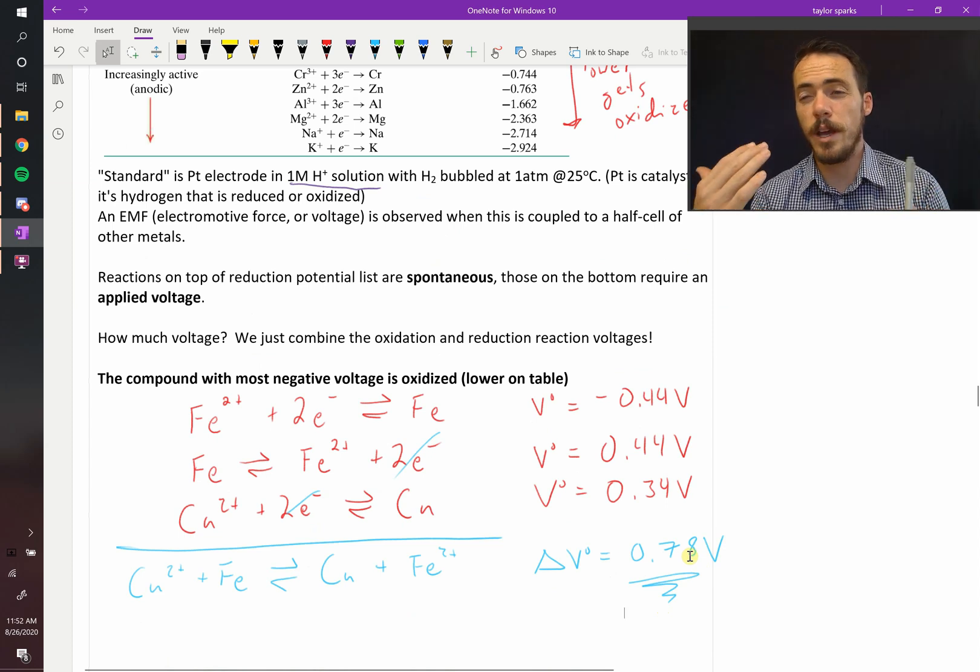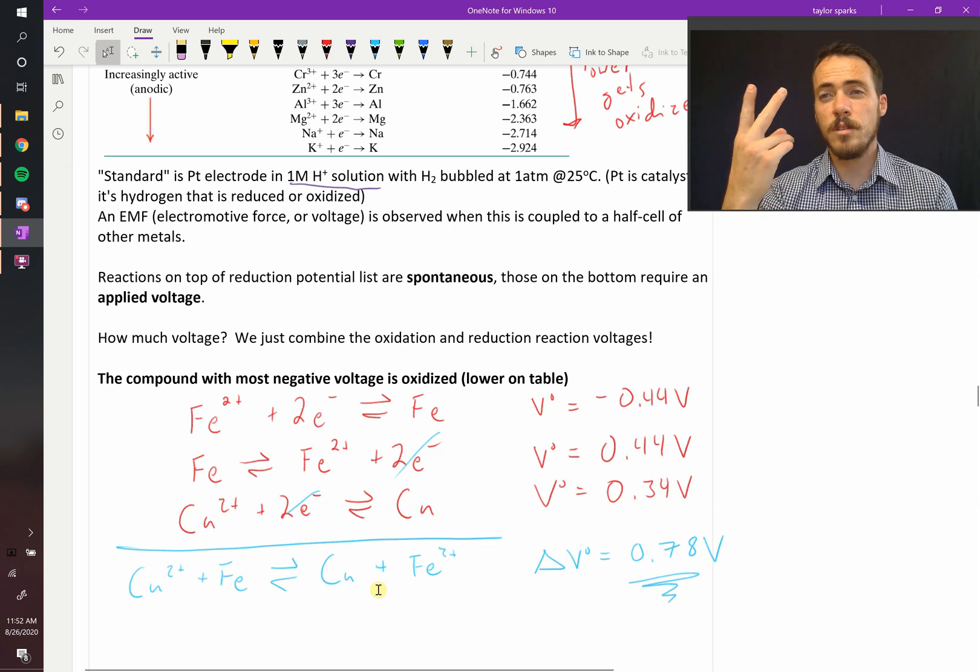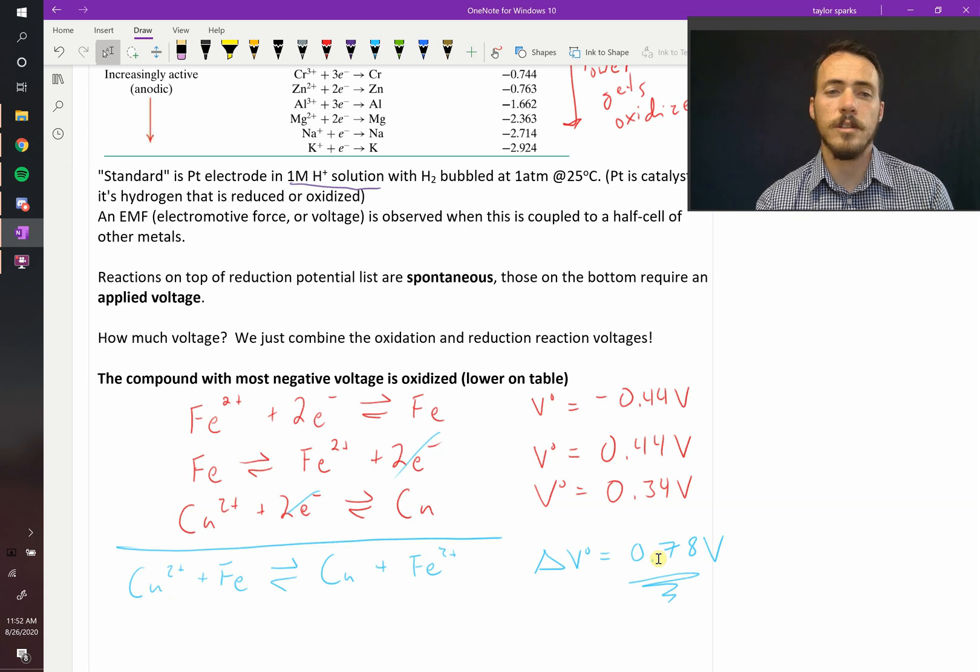So that's why in this case, this reaction came up with a positive voltage, which means spontaneous. Again, unlike free energy where negative was spontaneous, here a positive voltage means spontaneous. It happens automatically. This reaction occurs automatically. If we wanted to make the copper dissolve, we would have to switch this reaction, which means we'd have to apply this voltage to prevent the iron from dissolving and make the copper dissolve. We'd have to intentionally do that.